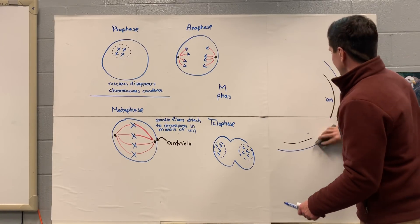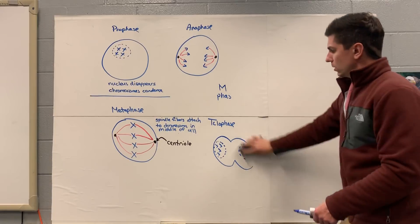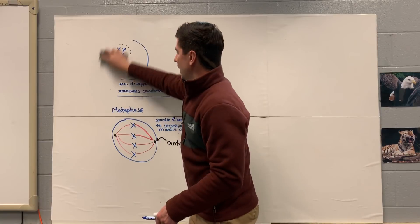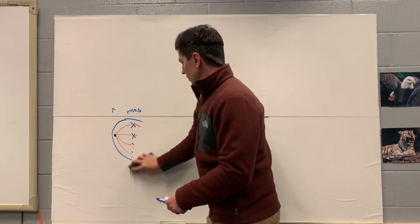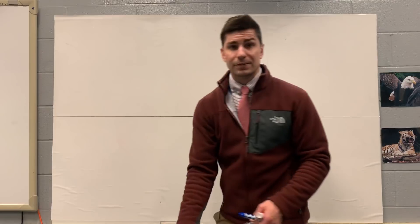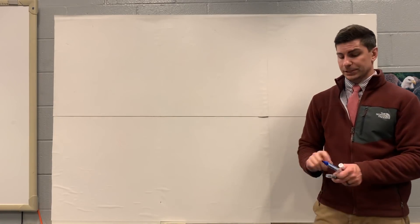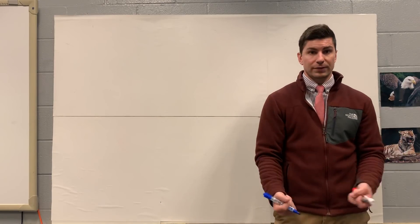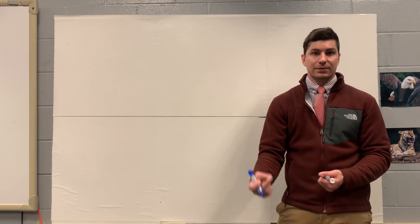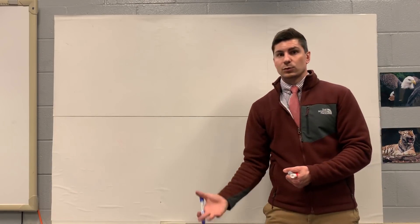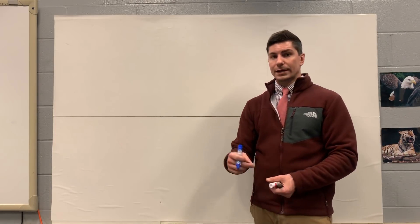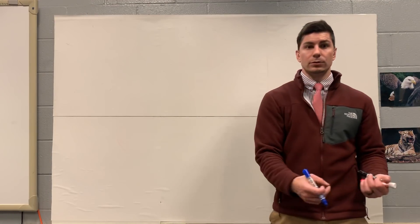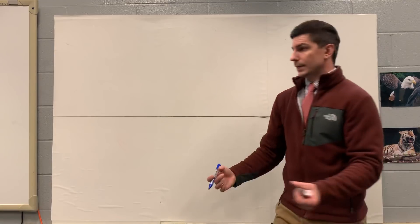The difference between mitosis and meiosis is that everything is essentially the same, except for a few changes. Interphase is identical. The difference is we are going to go through two cell divisions. So we're going to have prophase one, metaphase one, anaphase one, telophase one. Then, without DNA replication again, we go right into prophase two, metaphase two, anaphase two, and telophase two.